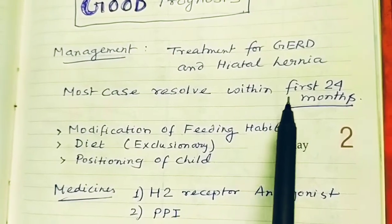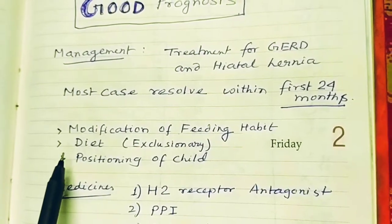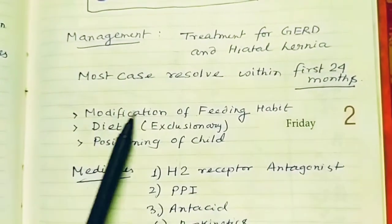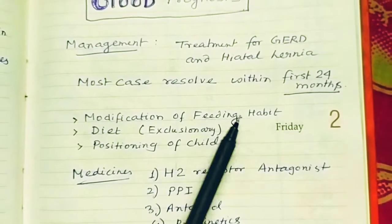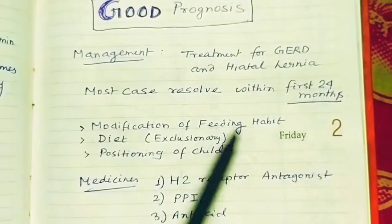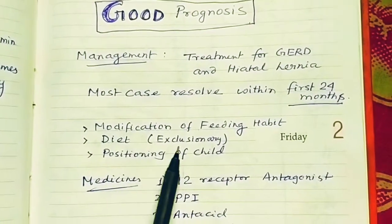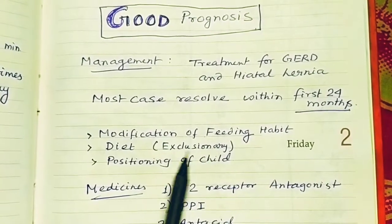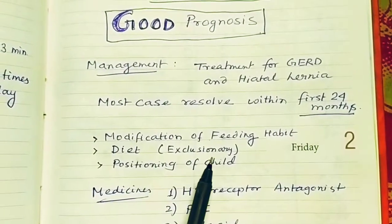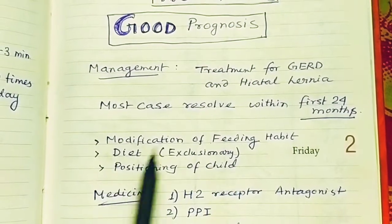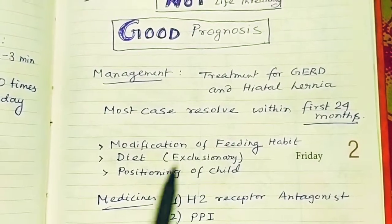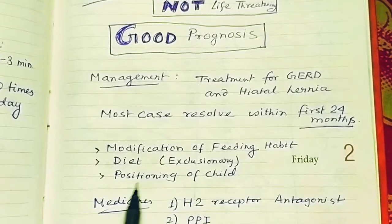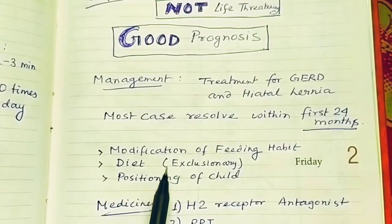Management approaches include: modification of feeding habits — what the baby is fed, the timing, and the items given; an exclusionary diet, where the doctor decides which foods to exclude; and positioning of the child. These three — modification of feeding habits, exclusionary diet, and child positioning — are the non-pharmacological management strategies for Sandifer Syndrome.